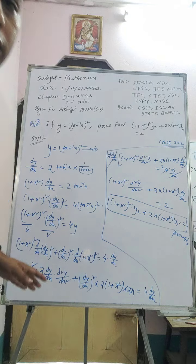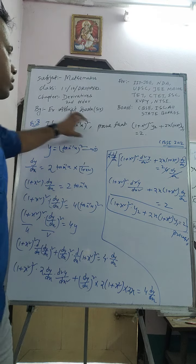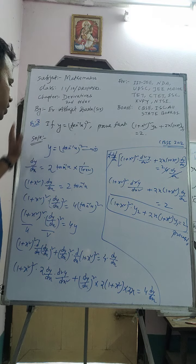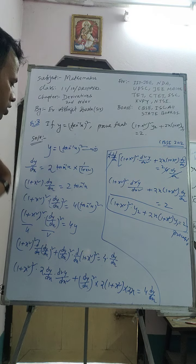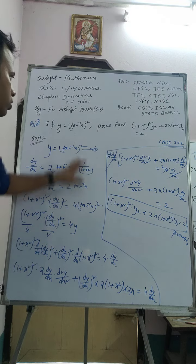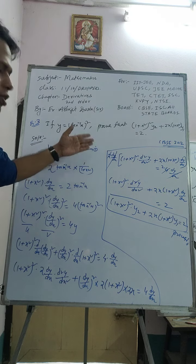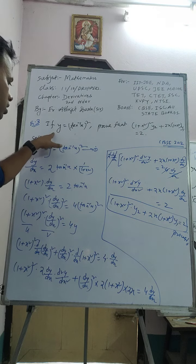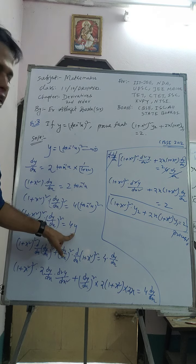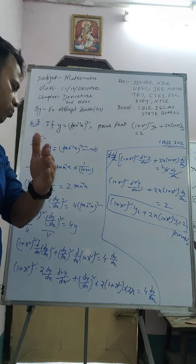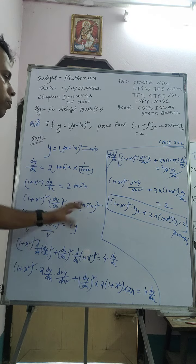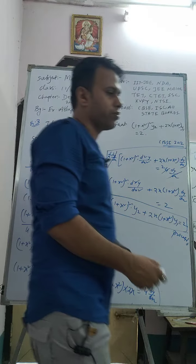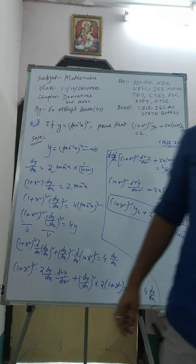To recap: given y = (tan⁻¹x)², I differentiated to get (1 + x²)·dy/dx = 2·tan⁻¹(x), then squared both sides so I could replace (tan⁻¹x)² with y. After differentiating again and simplifying using the product rule, the 2·dy/dx terms cancelled, giving the final result (1 + x²)²·y₂ + 2x(1 + x²)·y₁ = 2. I hope all of you understood.